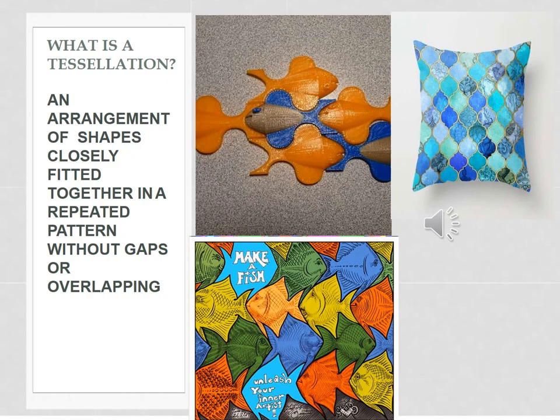What is a tessellation? A tessellation is an arrangement of shapes closely fitted together in a repeated pattern without gaps or overlapping.